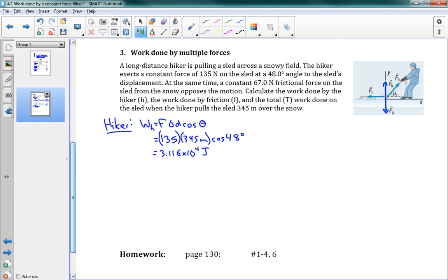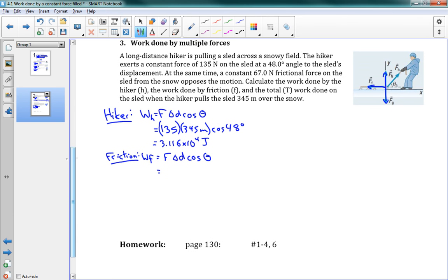So now I'll do friction. So the work done by friction is equal to, again, F delta D cosine theta. Now in this case, and in all cases, friction is always going to be exactly opposite the direction of motion. Cool. So that means that our friction here is at an angle of 180 degrees.